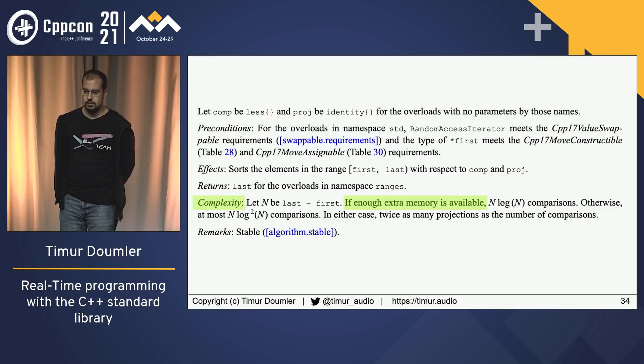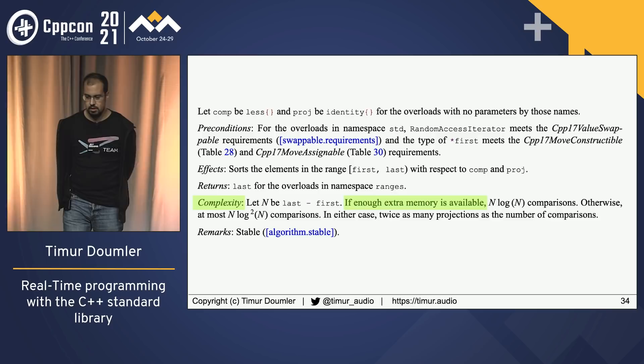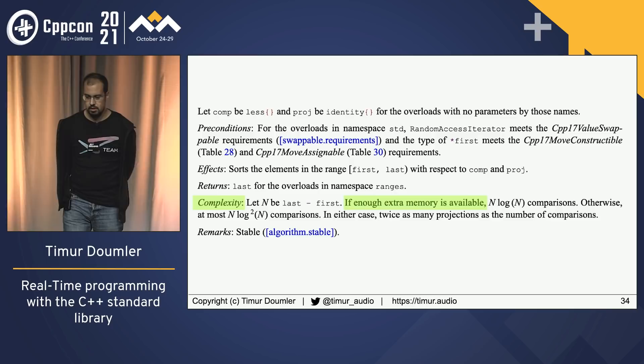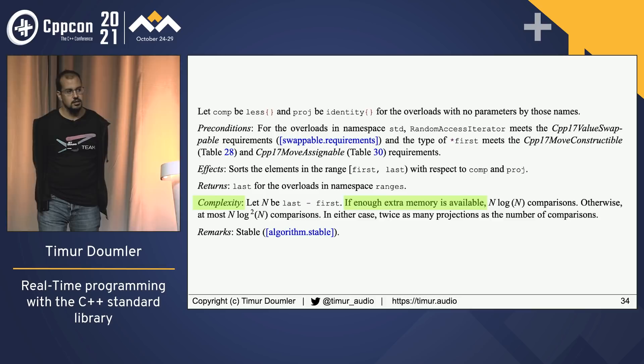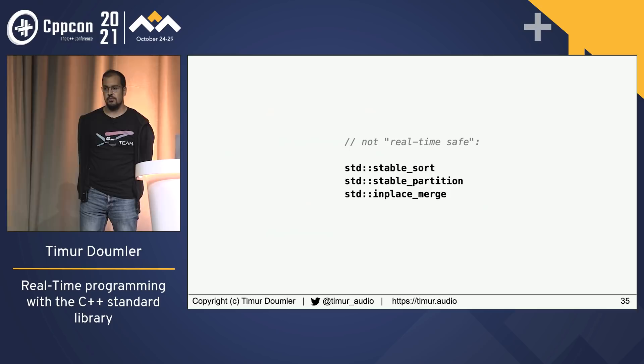There are a few algorithms where that's not the case, but you can spot them because the specification contains the magic words: 'If enough extra memory is available, this algorithm does X; otherwise it does something else.' Whenever you see those words, it means it's going to allocate a dynamic temporary buffer to use a faster implementation, and if it can't allocate memory it falls back to a slower one. This is the case for exactly three algorithms: stable_sort, stable_partition, and inplace_merge.